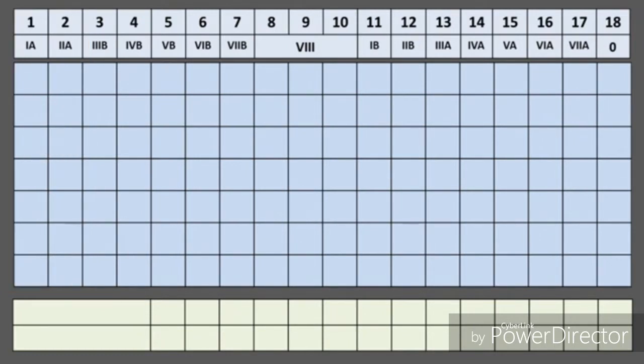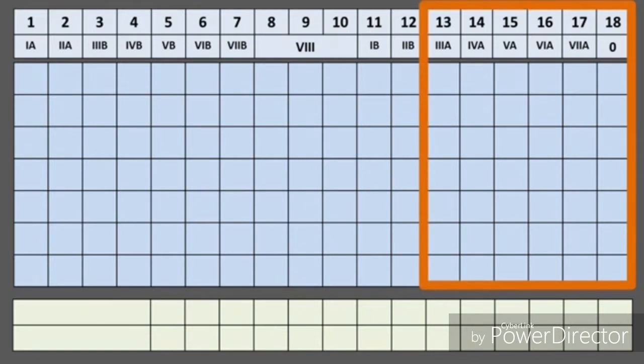The p-block is located on the right side. Also, its groups take letter A except the zero group or noble gases, which are arranged in six groups: 4A, 5A, 6A, 7A, and zero group.